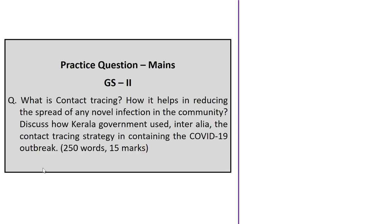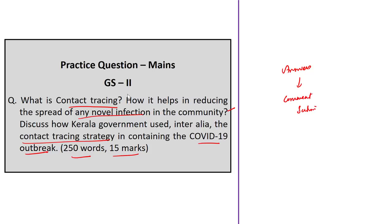The mains question asks: What is contact tracing? How does it help reduce the spread of novel infections in the community? Discuss how the Kerala government used contact tracing strategy in containing the COVID-19 outbreak. Answer in 250 words for 15 marks. Explain the definition of contact tracing, the three steps — contact identification, contact listing, and contact follow-up — and discuss how Kerala applied this strategy during the COVID-19 outbreak. Please post your answers in the comment section for feedback.